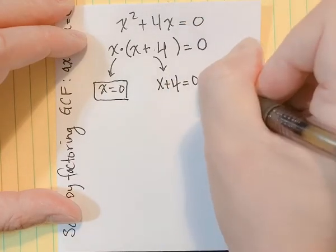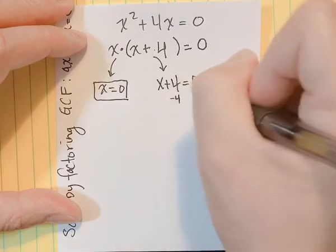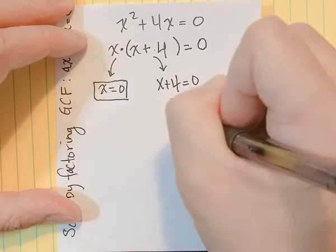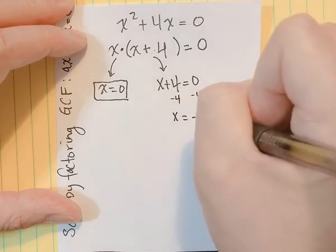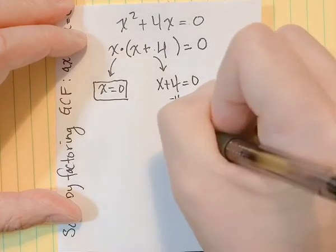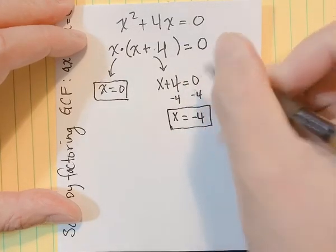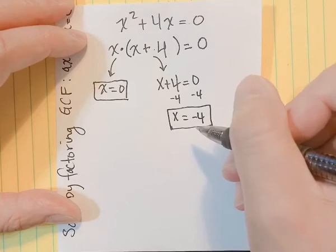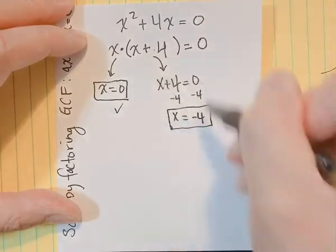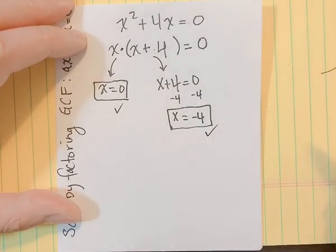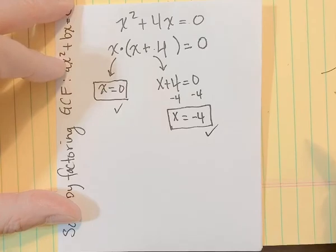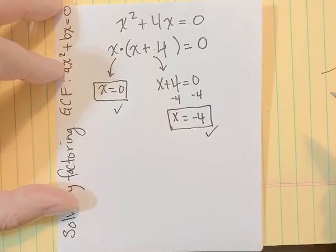We can move the plus 4 to the other side by subtracting it, and X would equal negative 4. So if X plus 4 is equal to zero, then X has to be negative 4. These turn out to be our solutions for this quadratic equation using factoring GCF to solve.